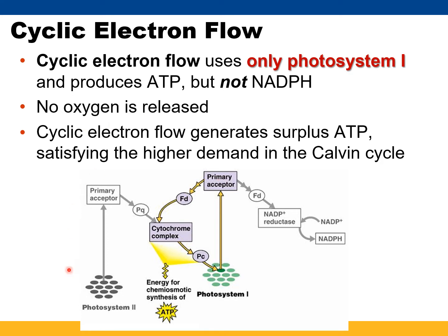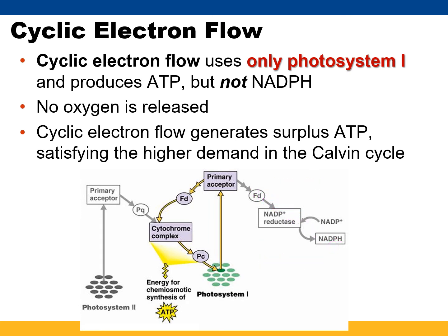We're not releasing oxygen in cyclic flow because we're not using photosystem 2 — we're just cycling through photosystem 1. This generates surplus ATP, probably to satisfy the need for additional ATP in the Calvin cycle. The electrons get handed off to ferredoxin in linear electron flow to NADP reductase, but they get handed off back through ferredoxin to the cytochrome complex for cyclic electron flow.